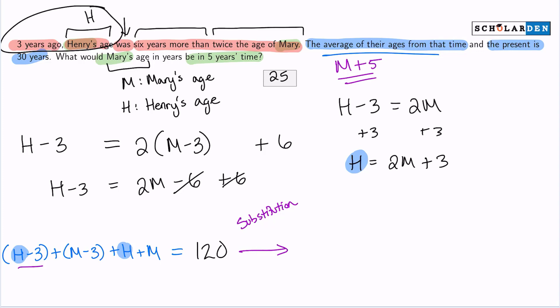Let's go ahead and get that done. If I use substitution, I'll have first here two M plus three minus three. Then we have M minus three. Then H, which is two M plus three. And then M, which is just Mary. And that's supposed to equal 120.